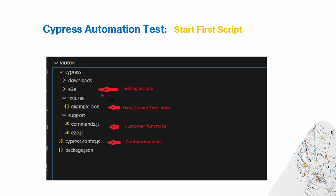The first folder is e2e, and this is the folder where you'll be putting all your test scripts. Later in this video we'll be putting all our test scripts within this folder. The second thing is under the folder fixtures, you have a file called example.json, and in this file you'll have data you'll be using in your automation testing — for example, user login data. Under the folder support, you have two important files with custom functions, and finally you have your cypress.config file for configuring the tests.